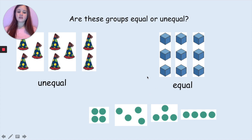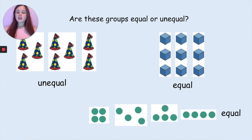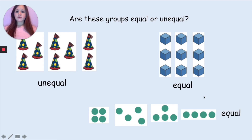And this one was tricky — they are equal. The dots might look different, they are in different orders, but they all have four: 1, 2, 3, 4 — counted across all four groups. Well done if you got those all correct.